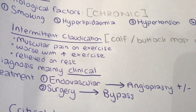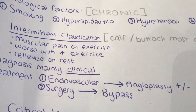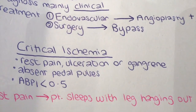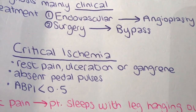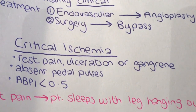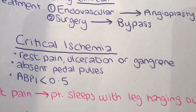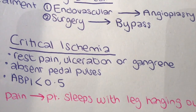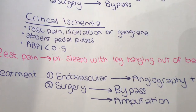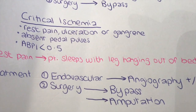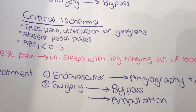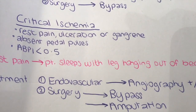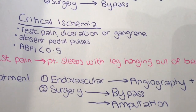Intermittent claudication is the mildest form of peripheral vascular disease, but if the disease is allowed to progress, patients can develop critical ischemia. This is described as rest pain, ulceration, or gangrene with absent pedal pulses, or diagnosed by an ABPI of less than 0.5. If a patient tells you that when they go to sleep at night their pain gets worse, alarm bells should start ringing.